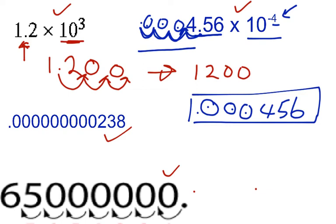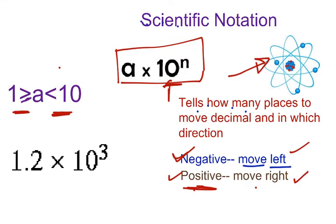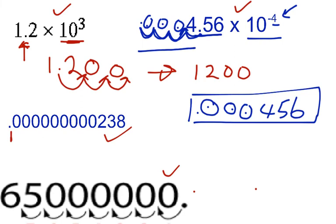Now let's do the opposite. You can be given a regular decimal number or a regular standard number and be asked to convert it. So let's do this one. We have all these zeros in front and then 2, 3, 8. If we look at this number, we know that it's less than 1. We have to remember that, because we know that's going to make our exponent negative. The final answer's first part must follow this rule — it must be greater than or equal to 1 but less than 10. So we have to move the decimal until we reach that point.